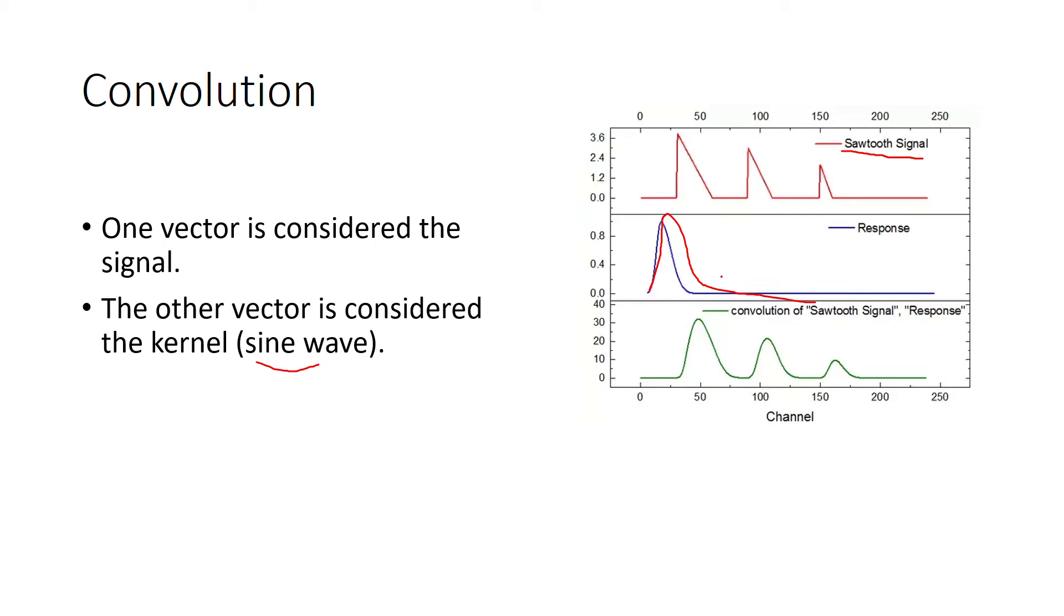Imagine taking the kernel and flipping it backward, and then dragging it forward in time so it passes over the signal. As the kernel passes over the signal, it drags on the signal, and the result of the drag is something that is neither the signal nor the kernel, but looks a bit like each of them. This will be the result.